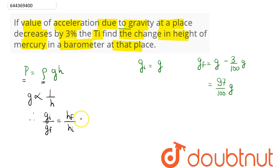We can say the initial acceleration due to gravity value is g and final acceleration due to gravity is 97/100 g. Hence, h_f comes out to be h_i times g_i divided by g_f.